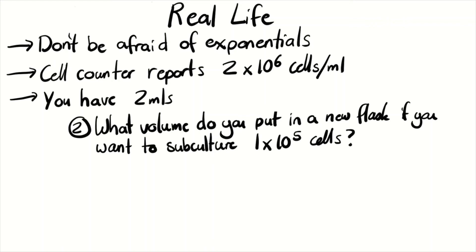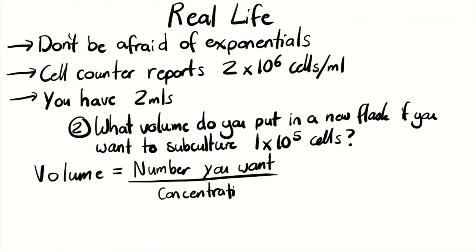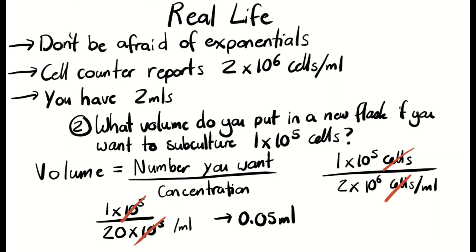The second question asked: what volume do you put in a new flask to subculture 1 × 10⁵ cells? The volume equals the number you want divided by the concentration: 1 × 10⁵ cells divided by 2 × 10⁶ cells per mil. To simplify, convert 2 × 10⁶ to 20 × 10⁵ — the 10⁵ terms cancel, leaving 1 divided by 20 per mil, which gives 0.05 mils or 50 microliters. Taking 50 microliters of your current cell suspension will contain 1 × 10⁵ cells.